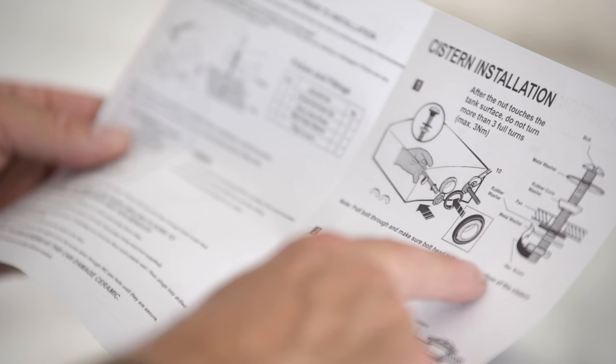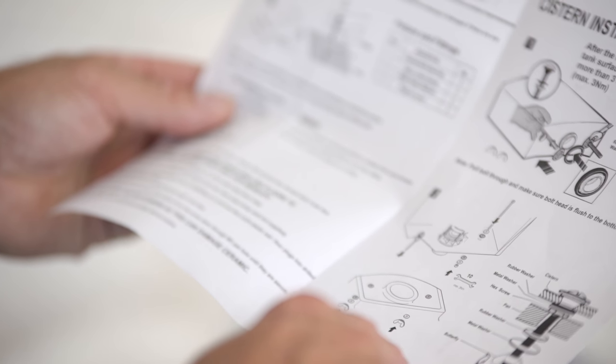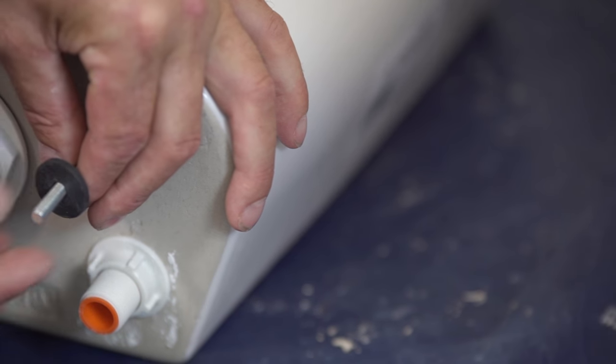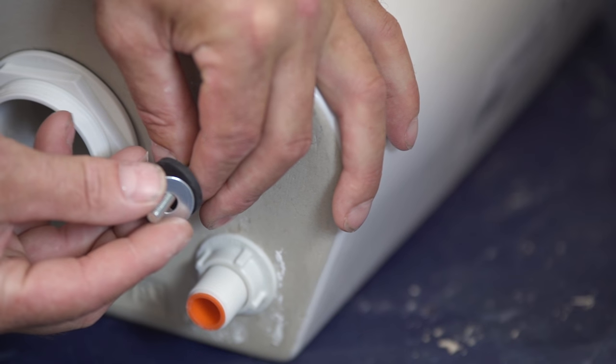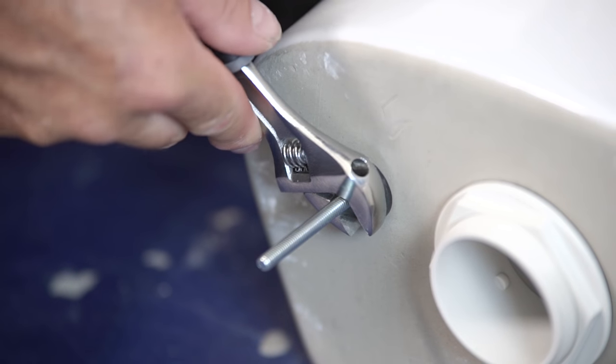To install the new toilet, start by assembling and fitting the flush mechanism and the inner parts of the cistern, being sure to carefully follow the manufacturer's instructions as mechanisms do vary between designs. When securing the fixings, take care not to over tighten and finish tightening by hand if need be.